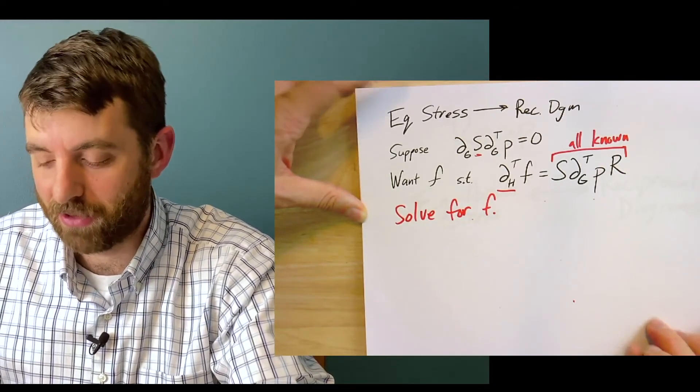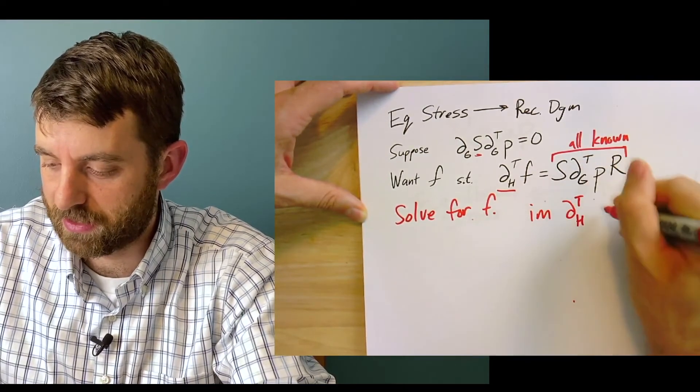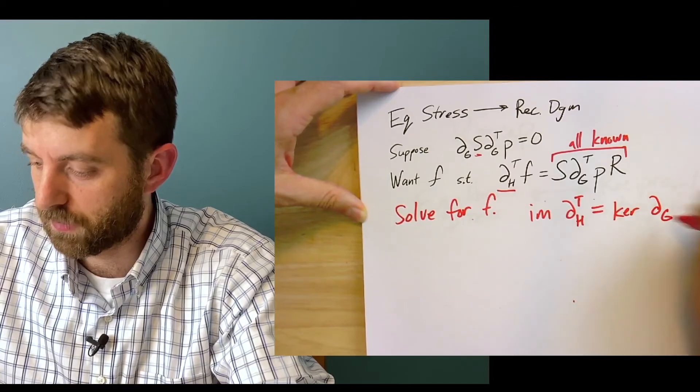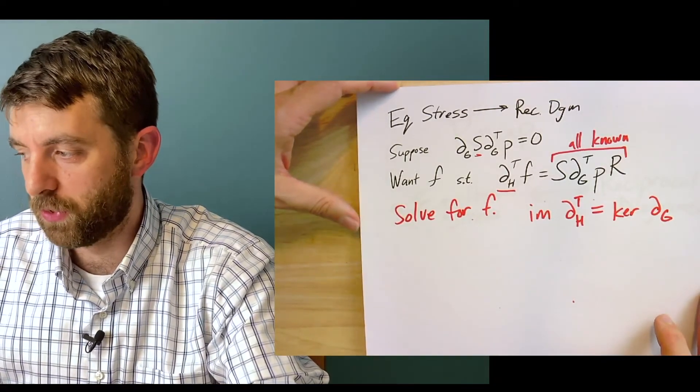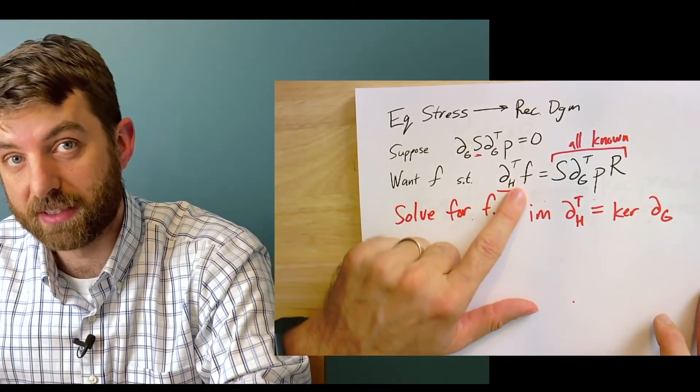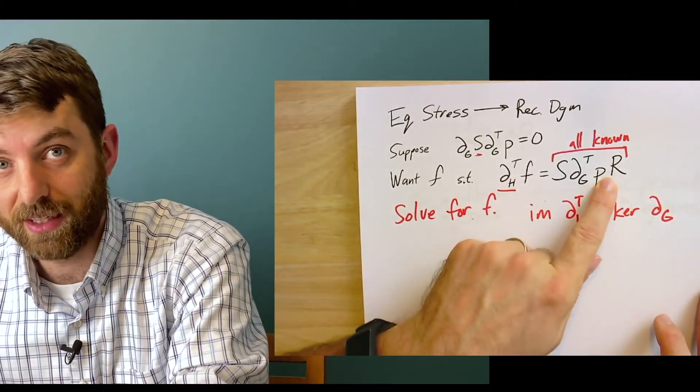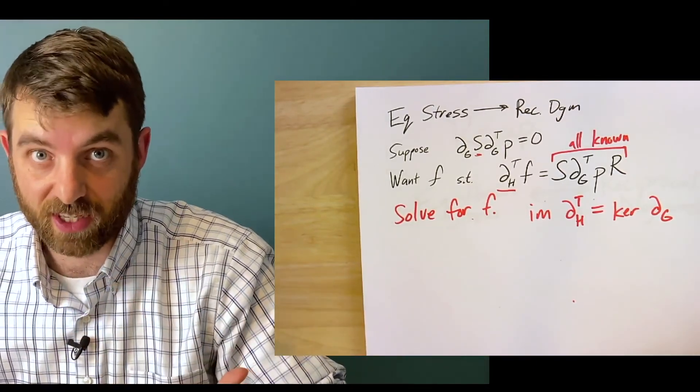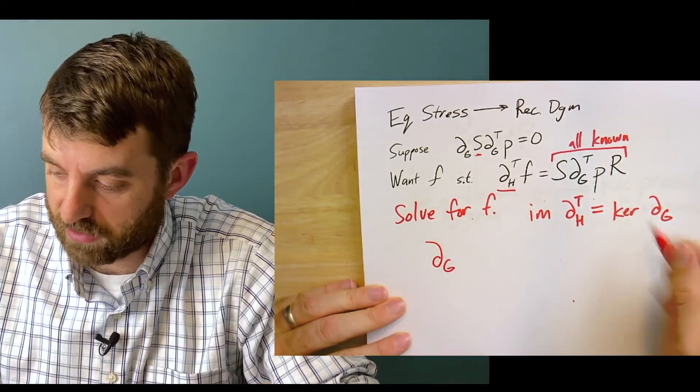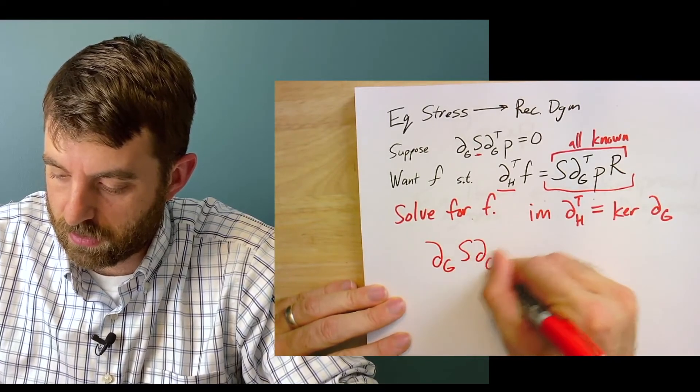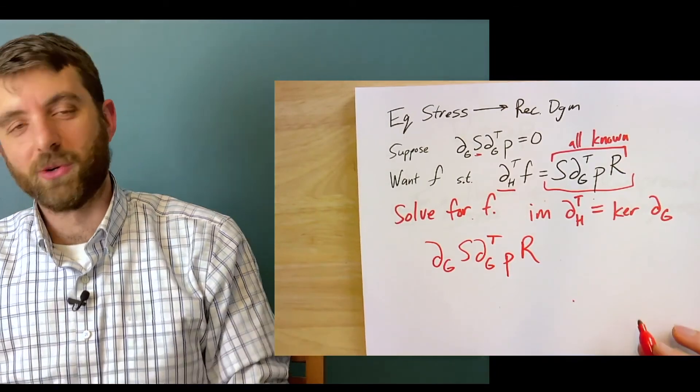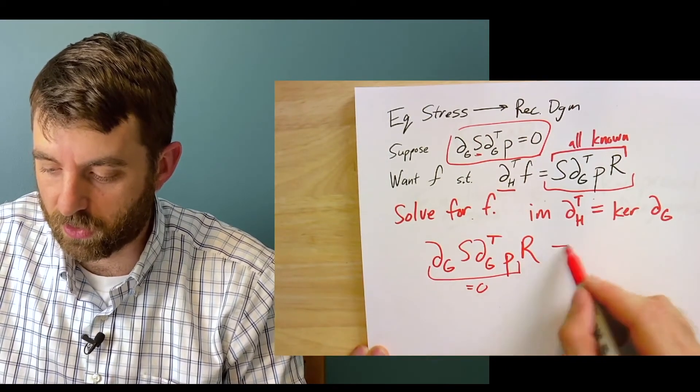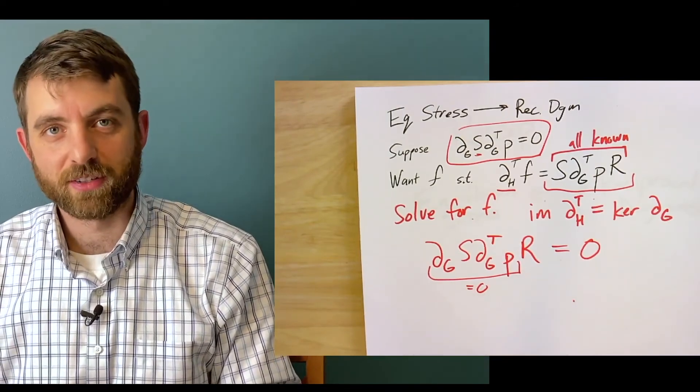So checking that this system has a solution is the same as checking that this right hand side is in the kernel of this map. And so to check if it's in the kernel, well, we could just do the multiplication and see if it gets zero. That is, we could just multiply this times the whole right hand side, which is S R. And now we're golden. Piece of cake. Because it was part of our hypothesis that this whole thing was going to be equal to zero. So the whole thing is equal to zero. Alright, zero times R is zero. There you go. So given the equilibrium stress, it also gives me a reciprocal diagram, and I can find it. I just need to solve one system of linear equations.